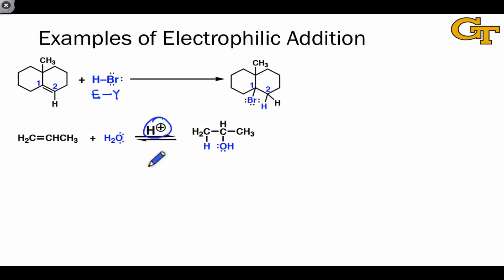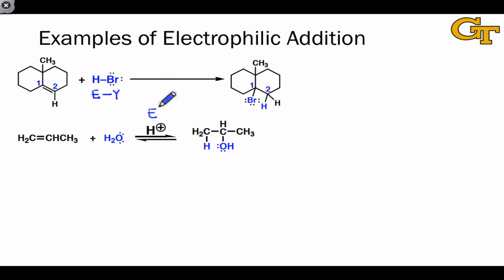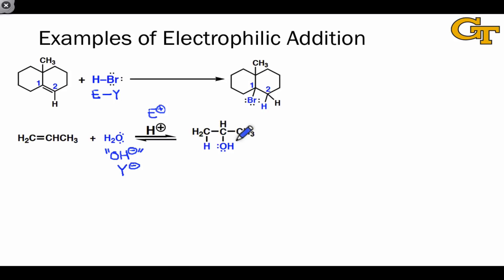In the presence of an acid catalyst, water can be made to add across the atoms of a carbon-carbon pi bond in what's called a hydration reaction. Here again, H+ is the key electrophile, and although it's not actually formed under the reaction conditions, we can think of water as OH−, which is comparable to the Y− structure we saw in the general picture. Once again, a pi bond is broken and two new sigma bonds are formed to H and OH.